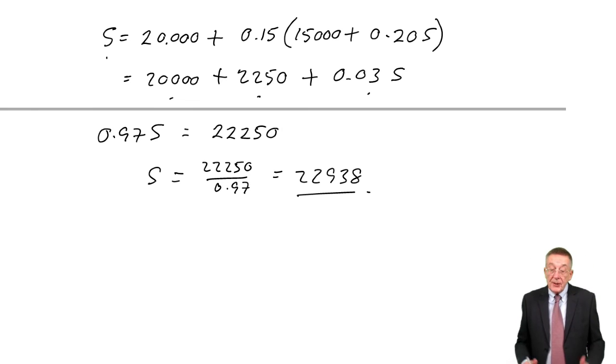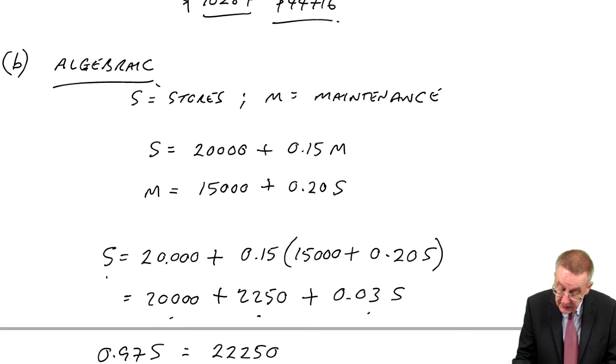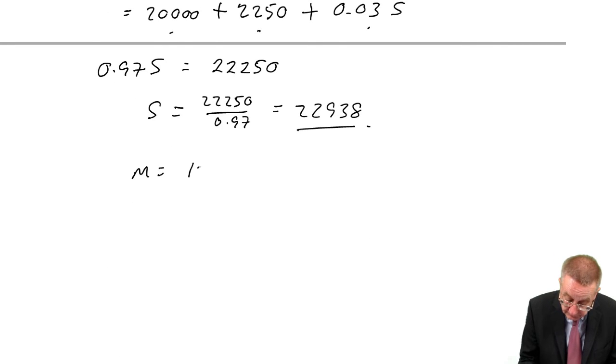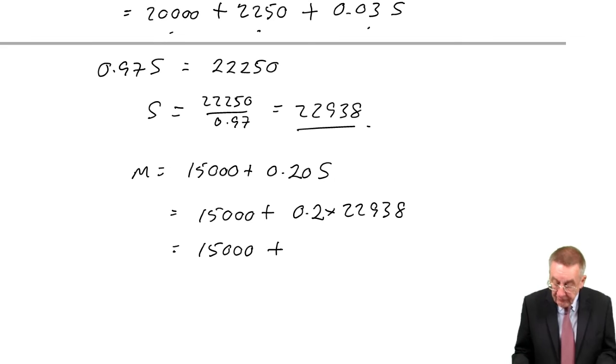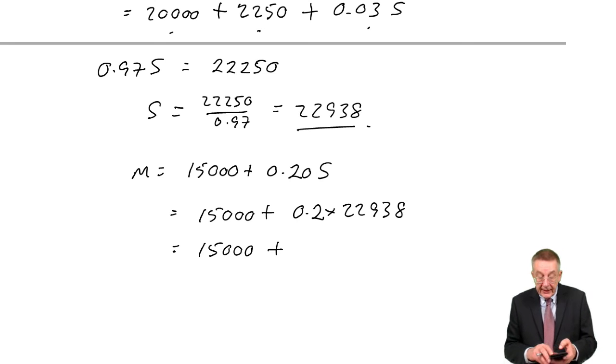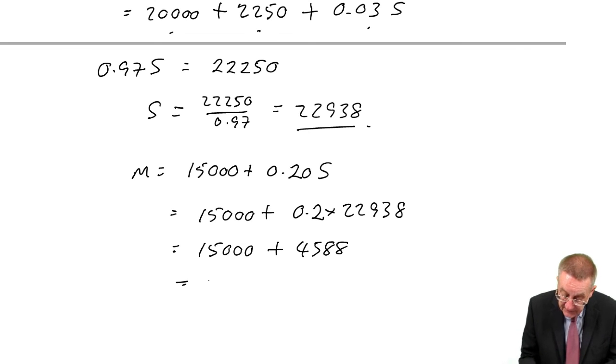And now we've got S, we can easily work out M. Because if you look back at the equation for M, M was 15,000 plus 0.2 of S. Which is 15,000 plus 0.2 times 22,938. I'm writing it stage by stage for everybody's benefit, but this you really should be able to do almost immediately on your calculator. 19,588. Again, I'm not worrying about cents. In this sort of exercise, go to the nearest dollar.